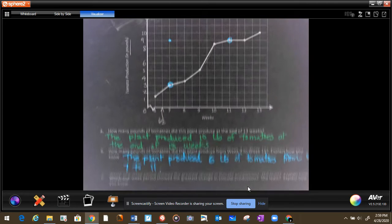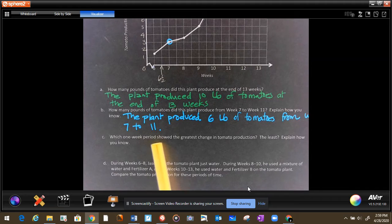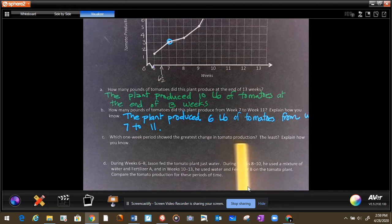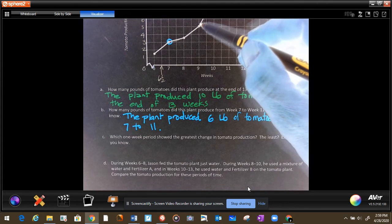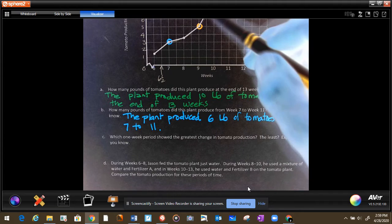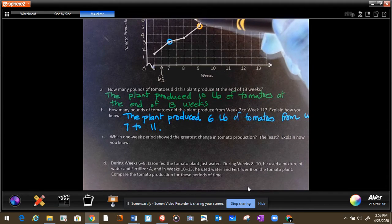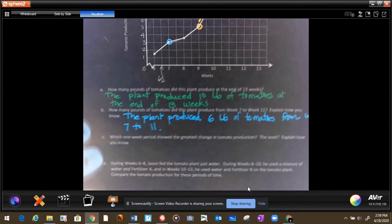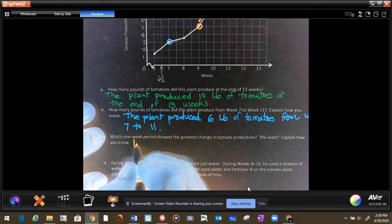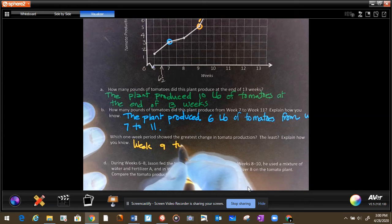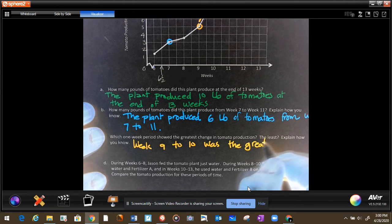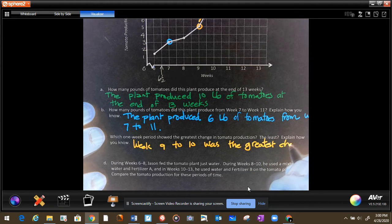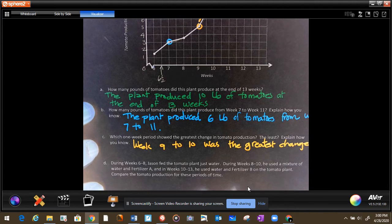Our next question is which period showed the greatest change in tomato production? The least? And explain how you know. Let's see the greatest. So if you look at 9 and 10, from here to here is the greatest production because there was 1, 2, 3.5 pounds. So we can write week 9 to 10 was the greatest change.